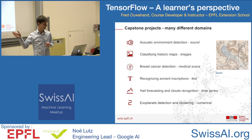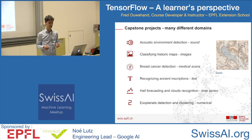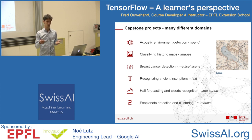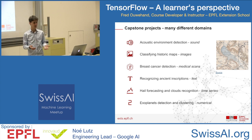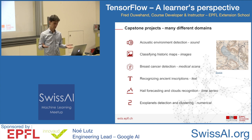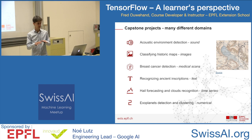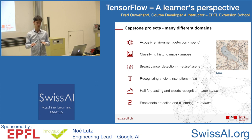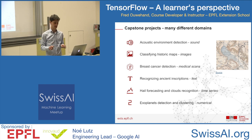We also had projects on hail forecasting and cloud recognition, and another on exoplanet detection and clustering. What strikes me is that in the course, I didn't teach any of these specific applications — I didn't teach how to process sound or do image segmentation. Learners were able to take the fundamentals from the course and apply them in different domains. I think this is one of the strengths of deep learning: you have one tool with a huge potential to solve different applications.